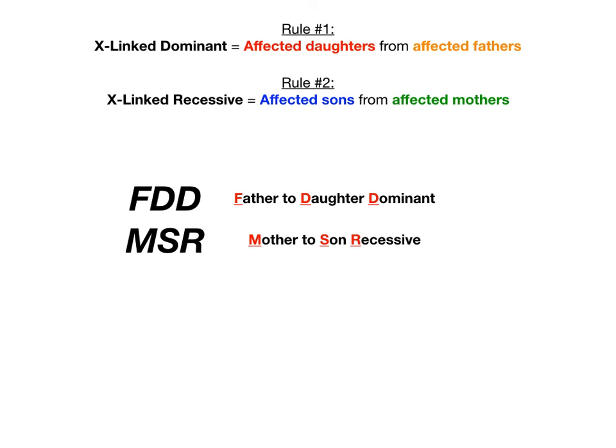FDD, MSR — father, daughter, dominant; mother, son, recessive. That's my method for getting X-linked pedigrees right. Super easy, very high yield, and awesome to use on test day.